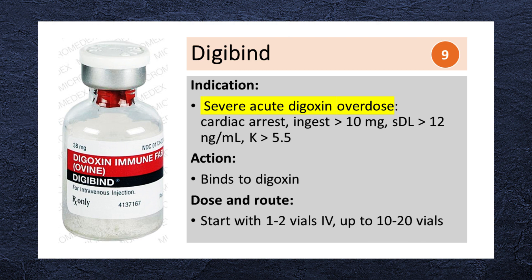Digibind is used in cases of digoxin toxicity. It binds to digoxin, reducing its concentration and reversing its toxic effects. Indications include acute digoxin overdose with cardiac arrest, life-threatening cardiac dysrhythmia, ingested dose greater than 10 mg, serum digoxin level greater than 12 ng/mL, or serum potassium greater than 5.5 mmol/L. The recommended dose is usually 10 to 20 vials IV.